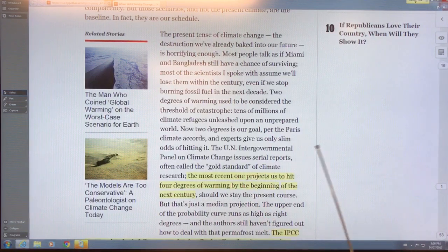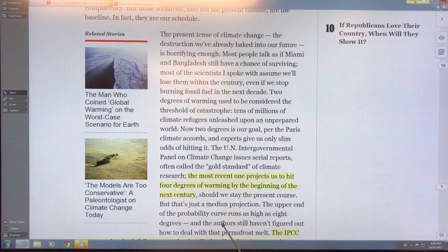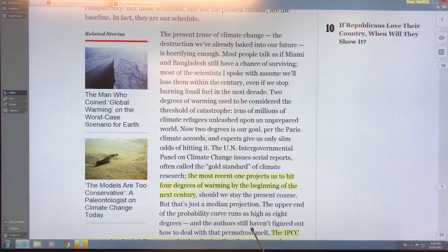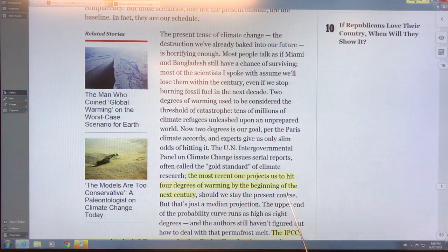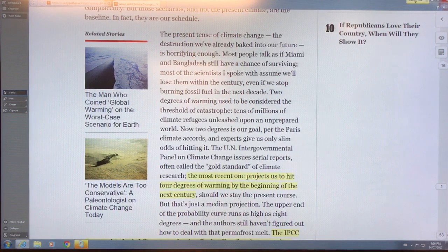As many of the scientists are pointing out, the high probability on the probability curve, the upper end, is eight degrees. That's the worst-case type scenarios, and those scenarios will not be conducive to people being on this planet in any large quantities of numbers, or plants, animals, everything.